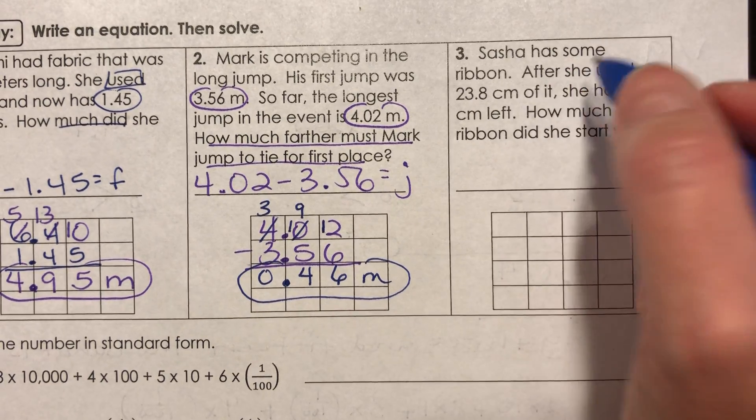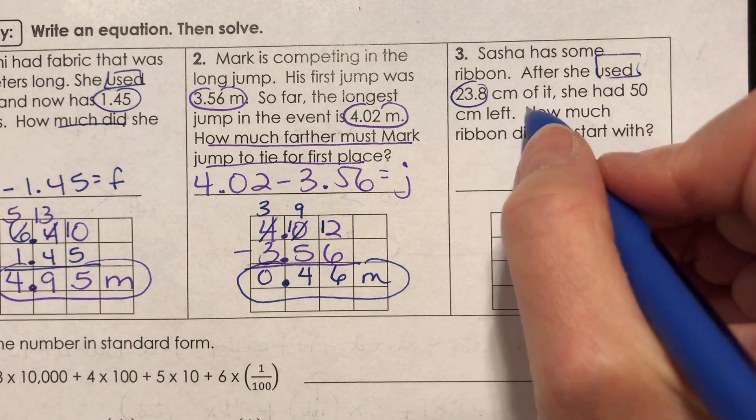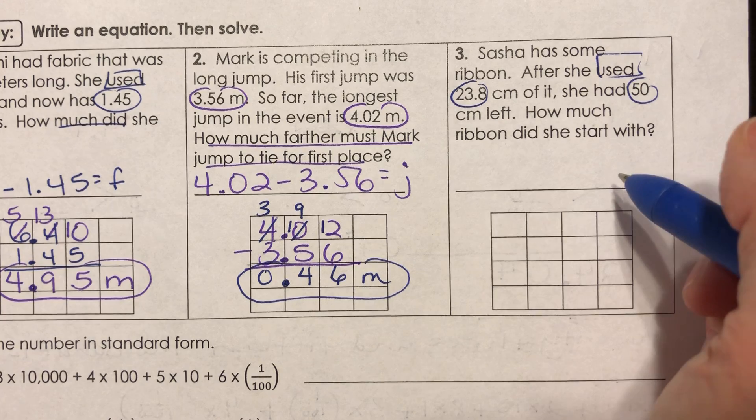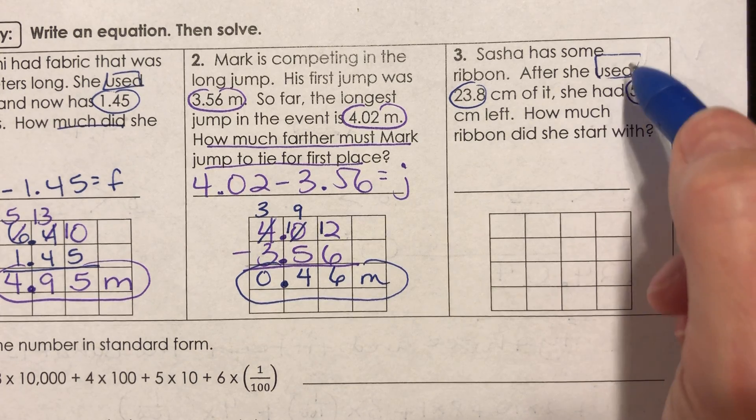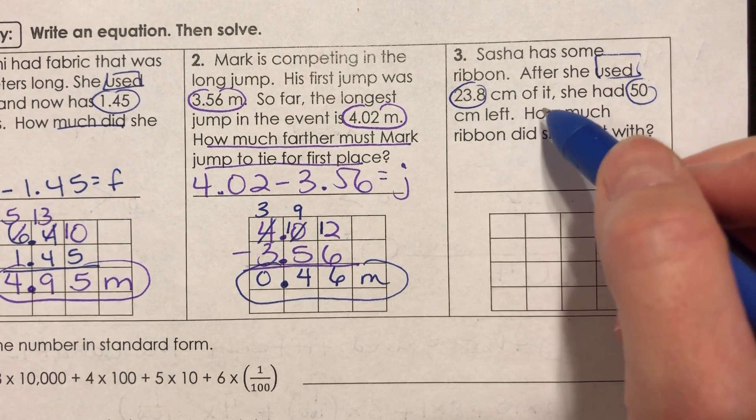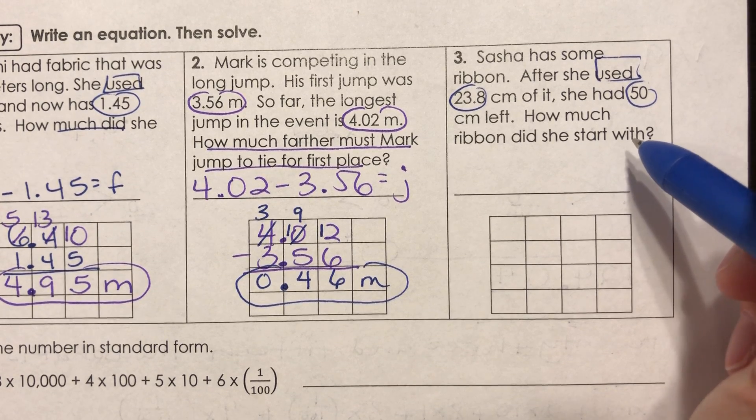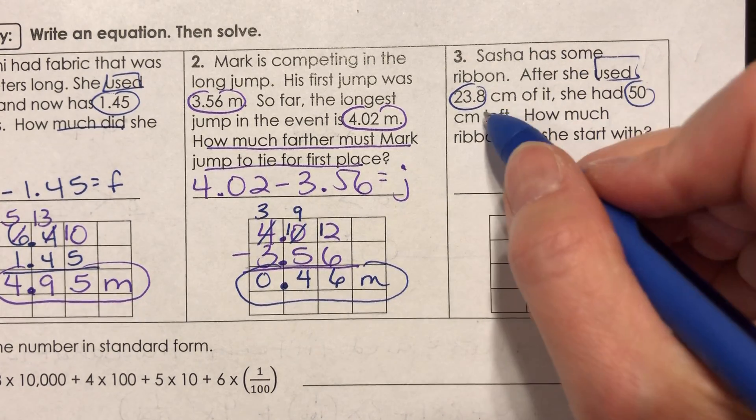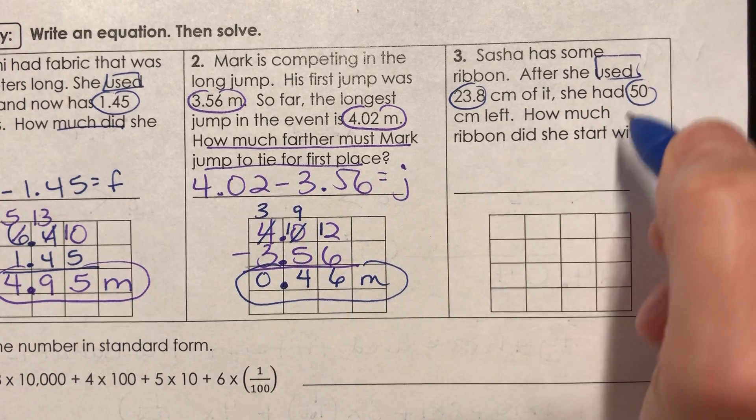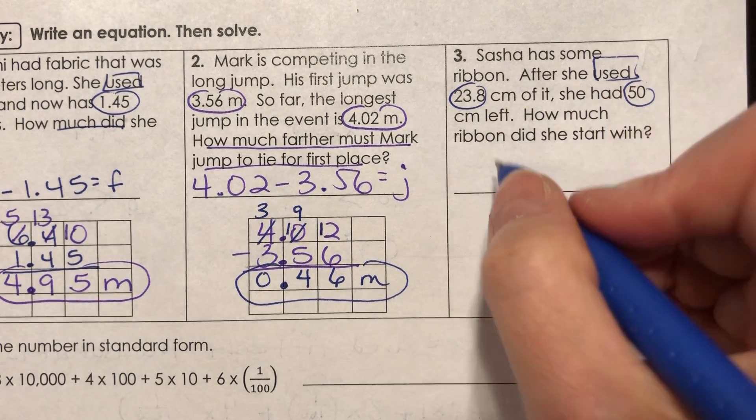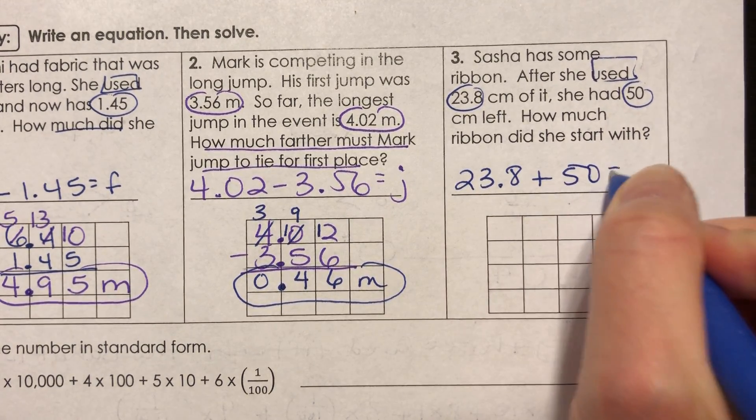Okay, last one of these. Sasha has some ribbon. After she used 23 and eight tenths centimeters of it, she has 50 centimeters left. How much ribbon did she start with? So one more time, she has some ribbon, we don't know how much. She used 23.8 centimeters of it. She had 50 centimeters left. How much ribbon did she start with? So if she has 50 centimeters that's left after using 23.8, our answer is not gonna be lower than how much she has left, right? This means I need to add these together to figure out how much she started with. So we can say 23.8 plus 50 equals R for ribbon.